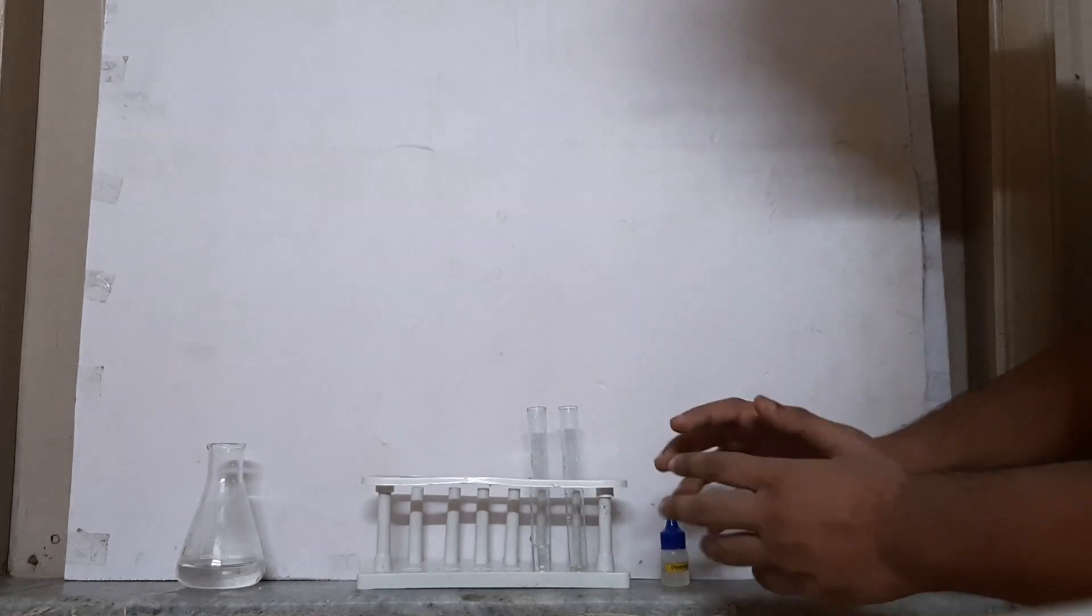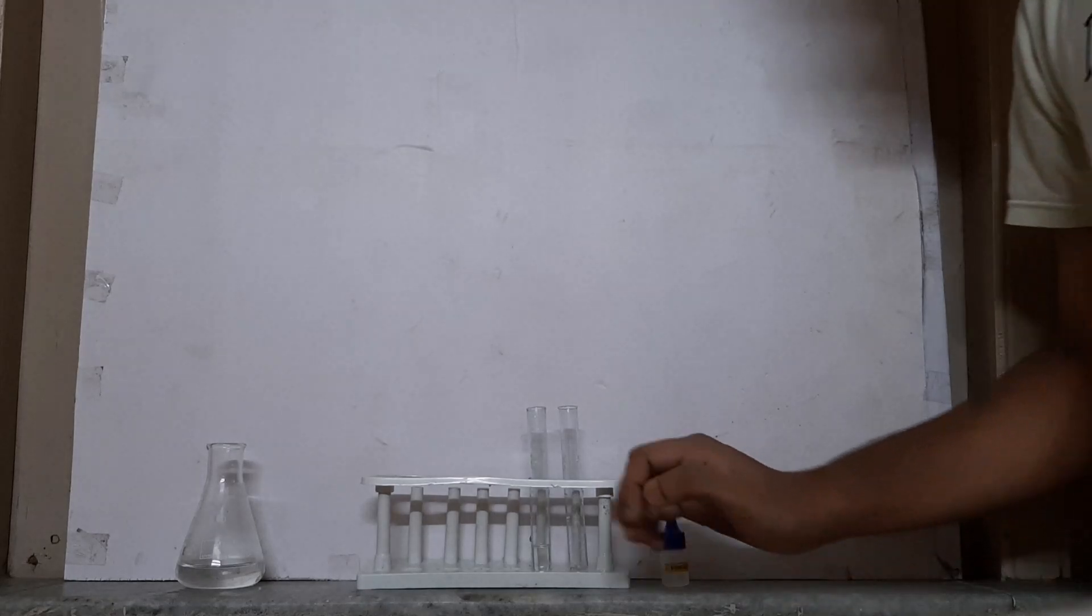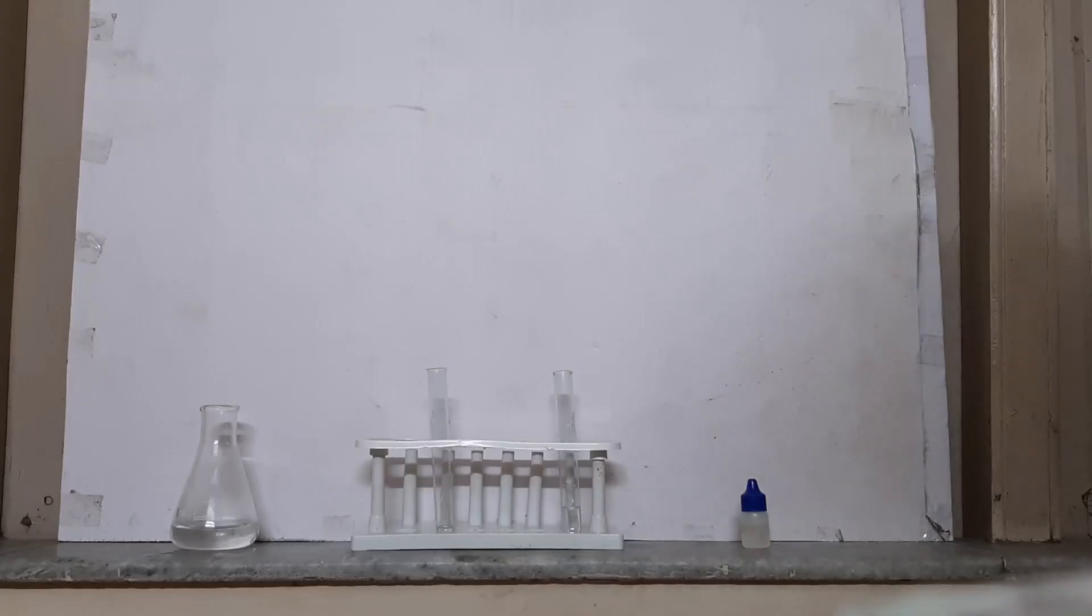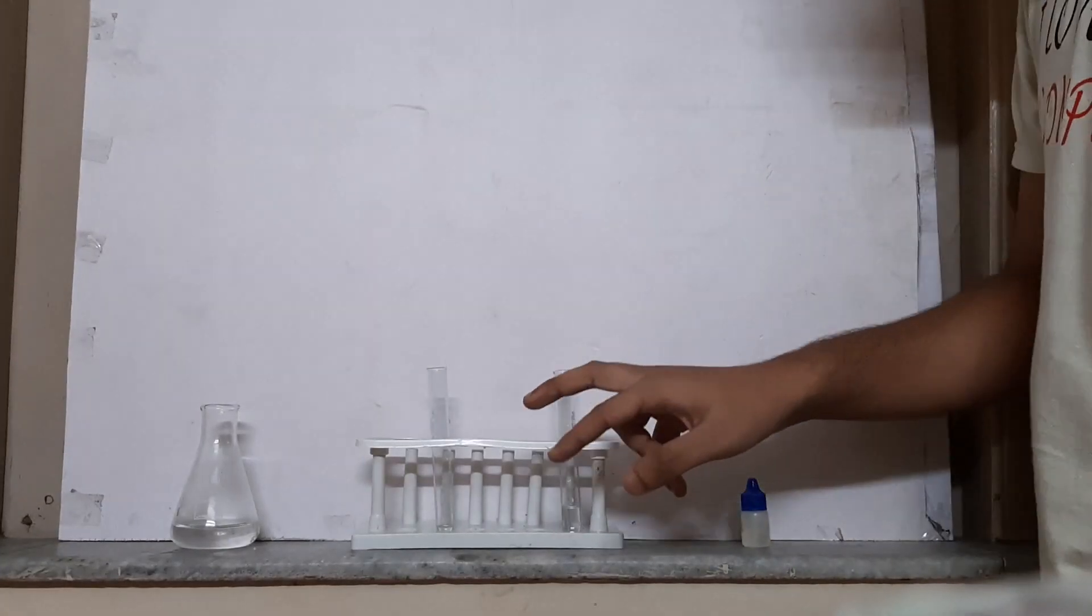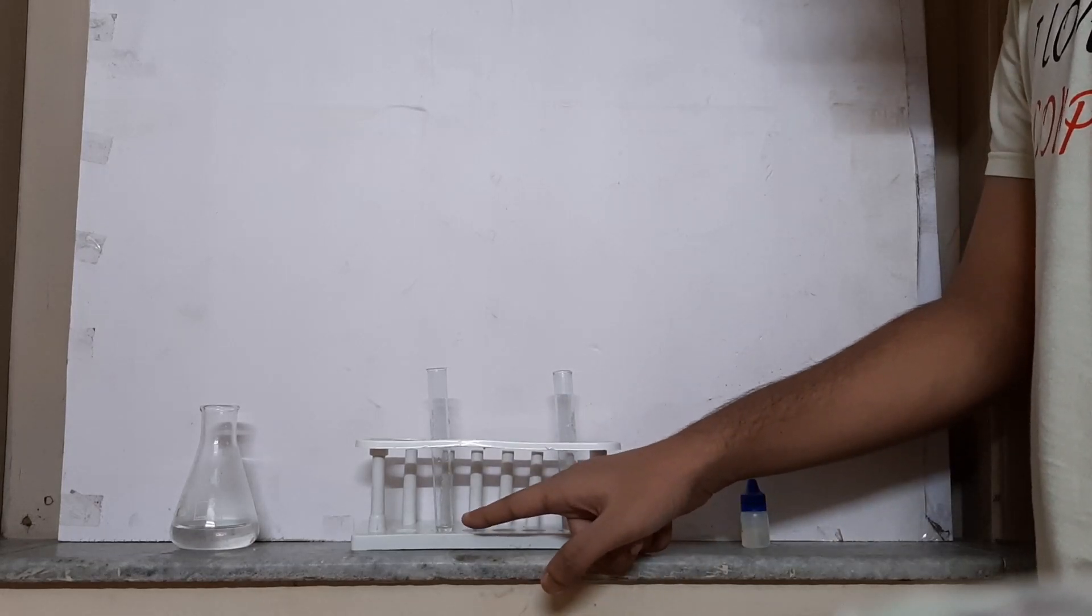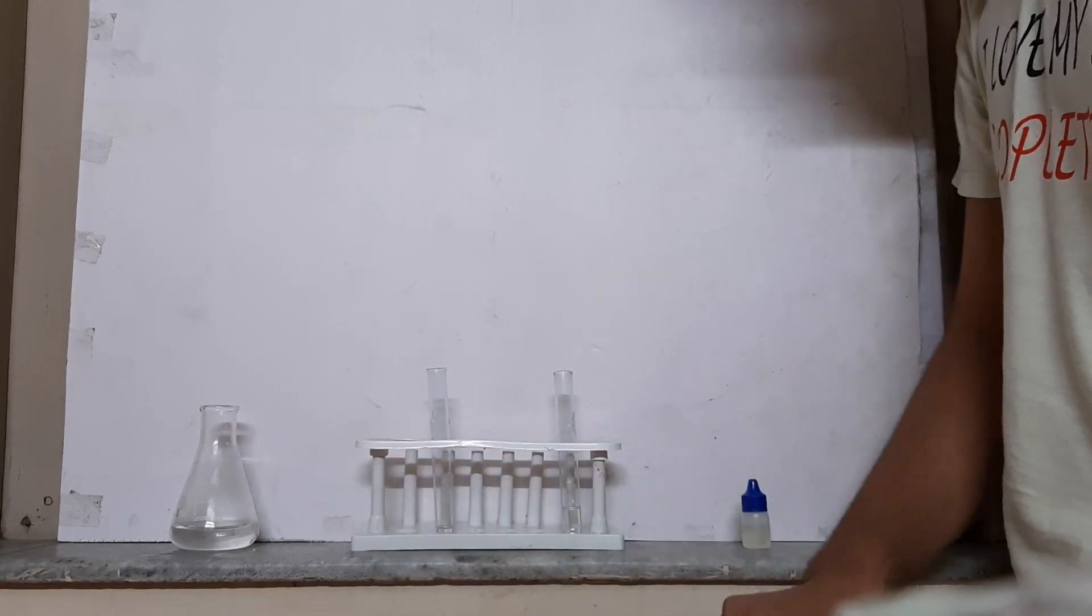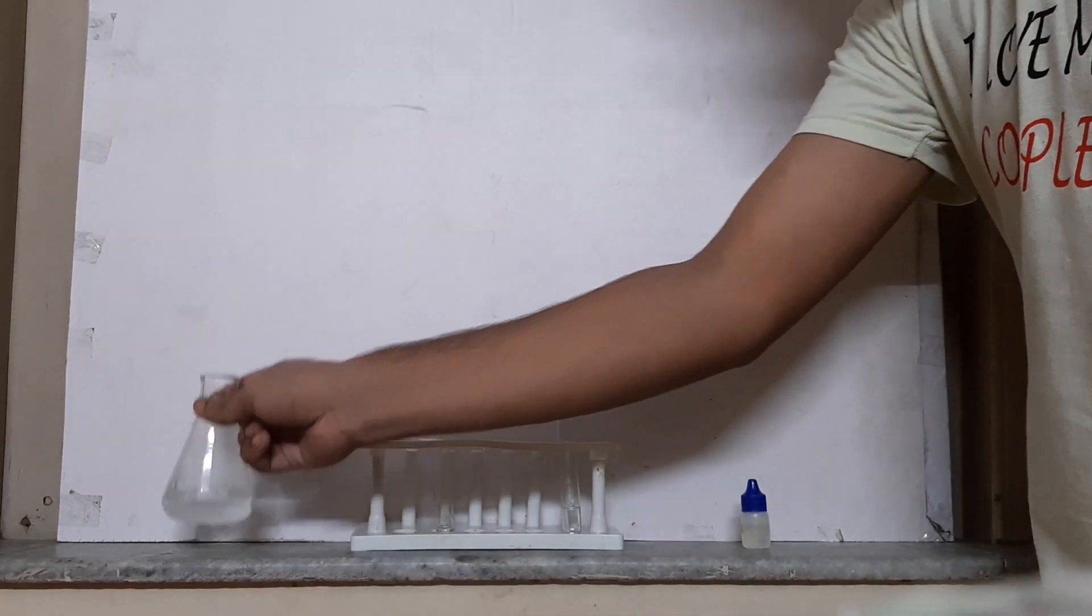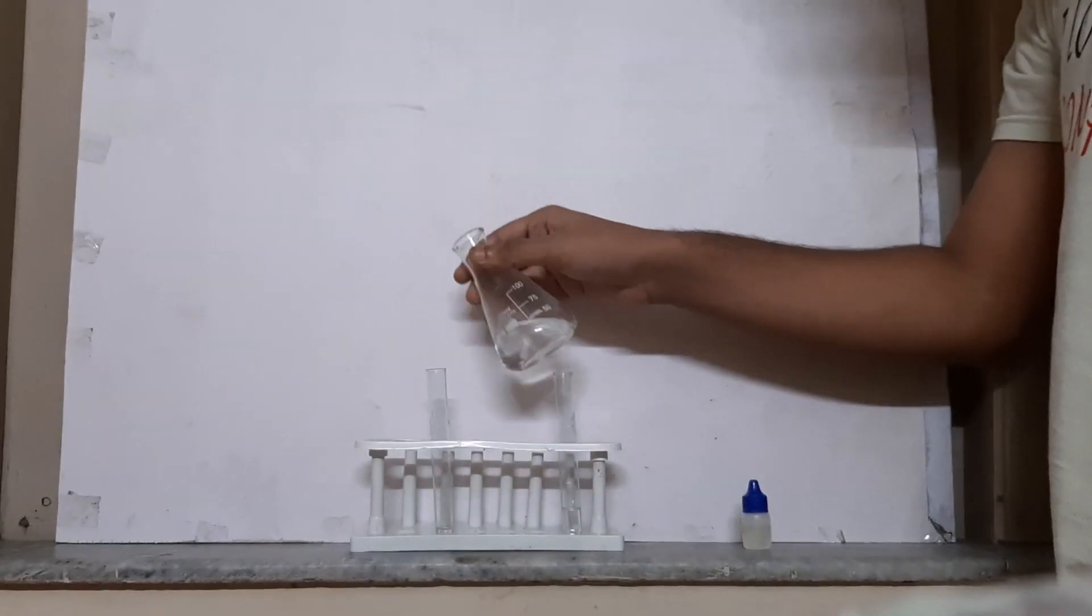Now let's wash the test tubes and return for the second part of the experiment. Now I have dropped some phenolphthalein here in this test tube. I'm going to add the concentrated NaOH solution and we'll see if there is a color change.